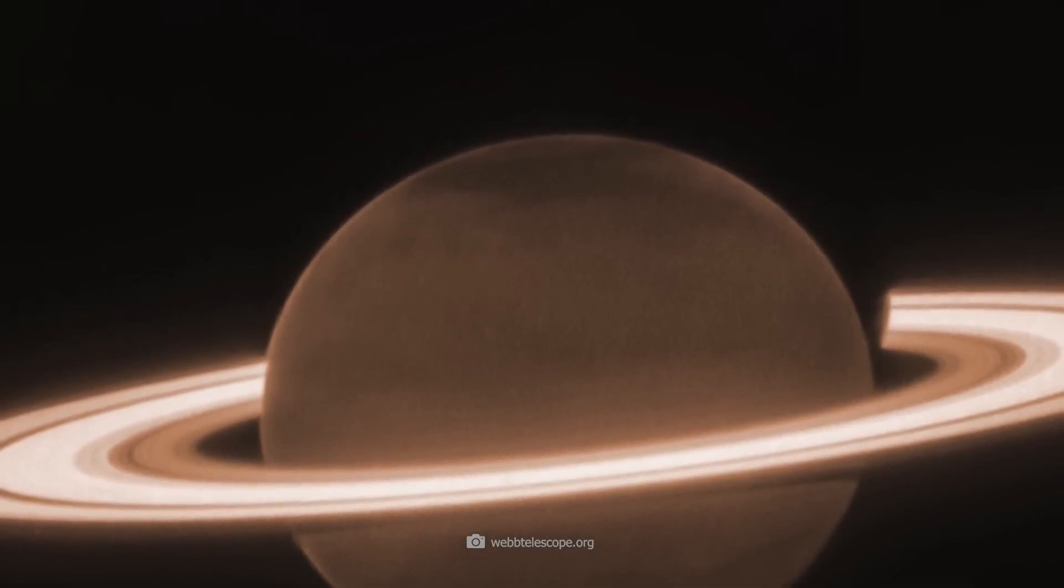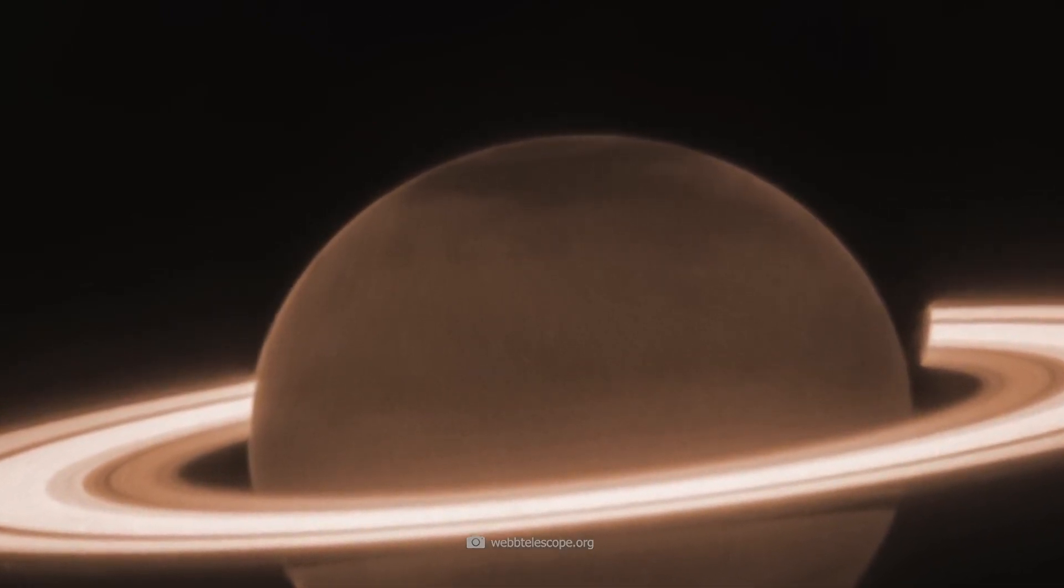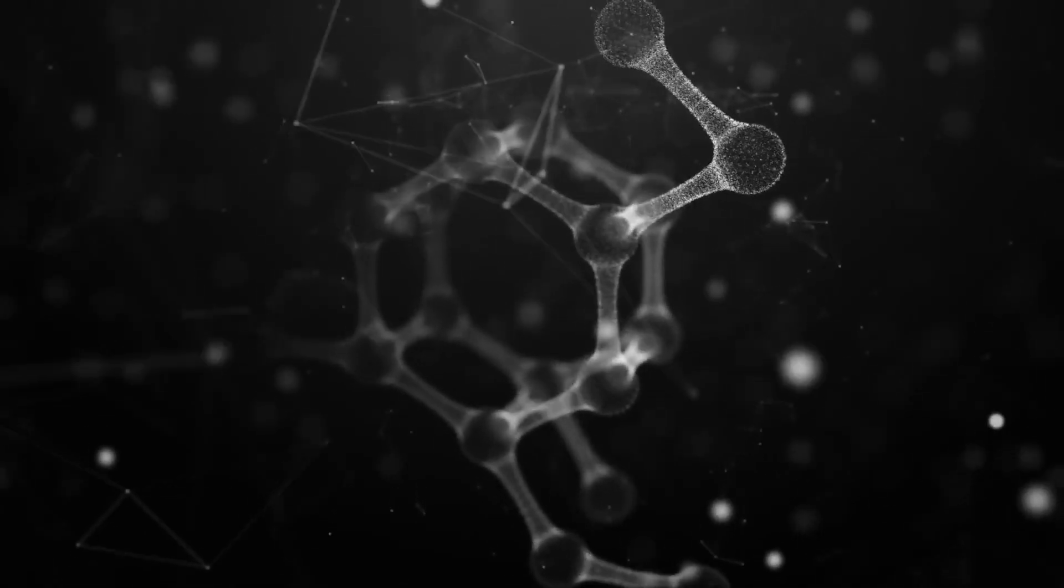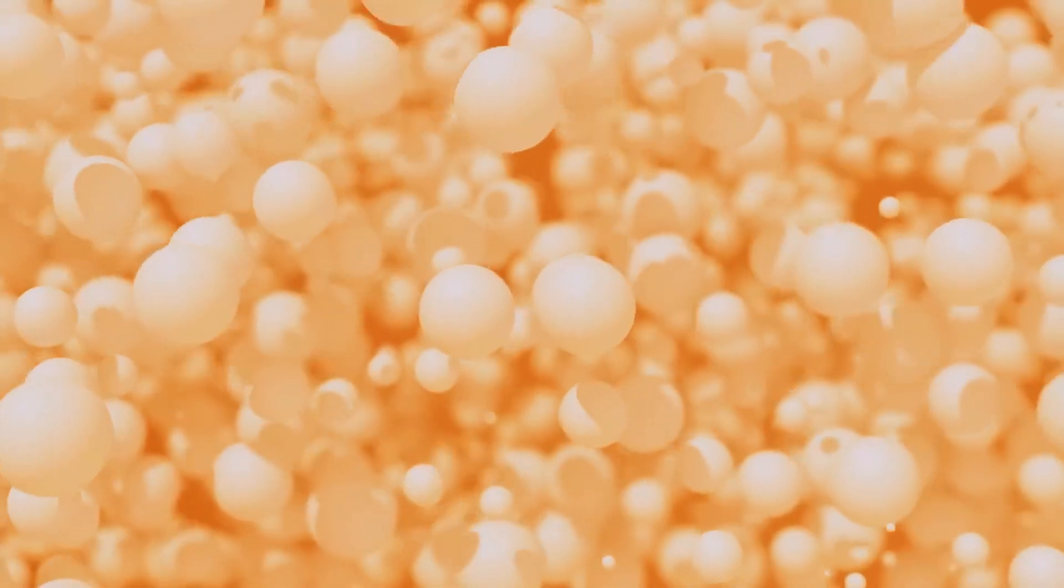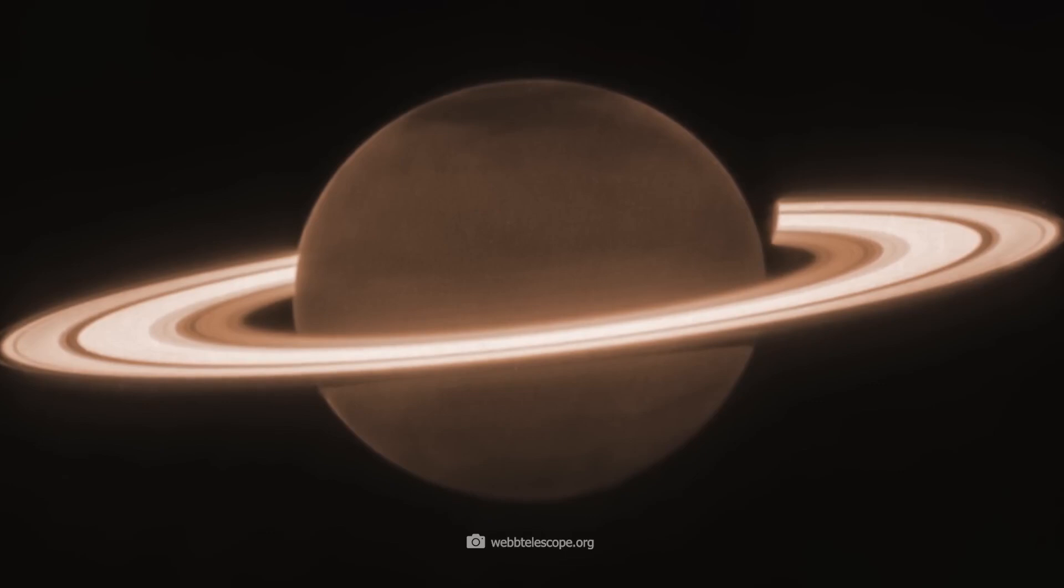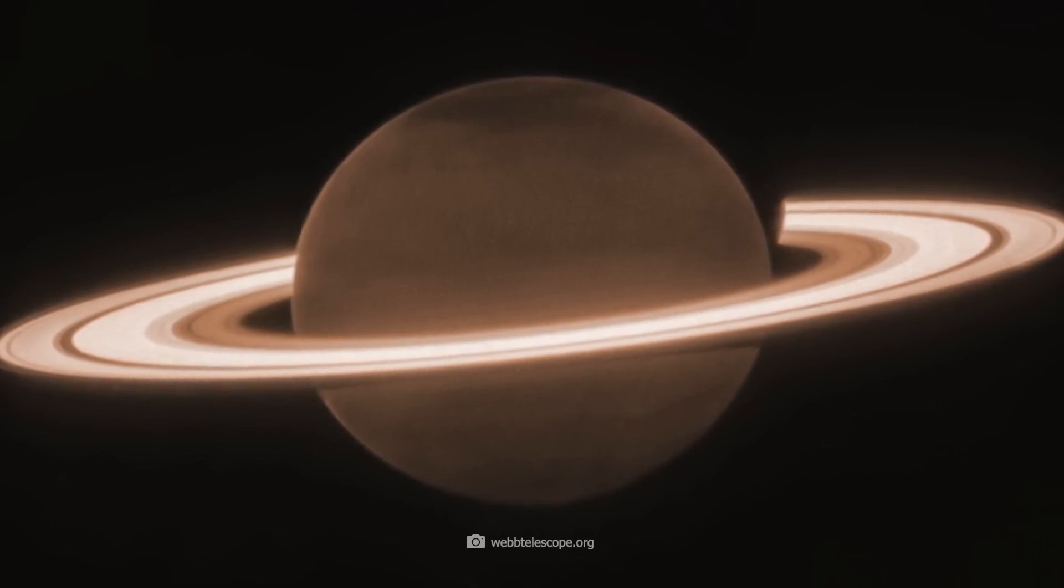When the Cassini space probe photographed Saturn and inspected the north pole, it revealed something incredible. Traces of meteorological phenomena were visible in the depths of the storm center, which is shaped exactly like a hexagon.